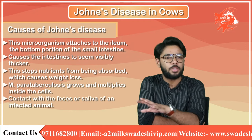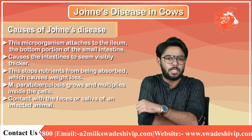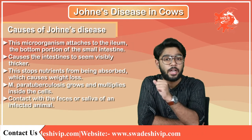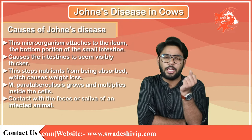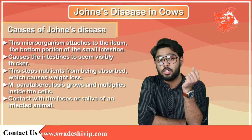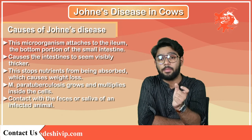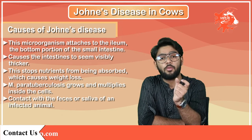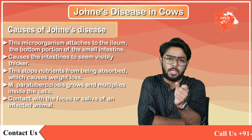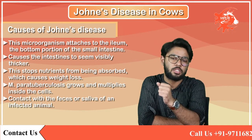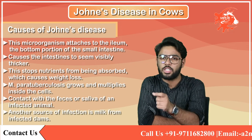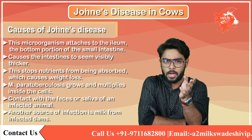The primary cause of the spread of Johne's disease is contact with the feces or saliva of an infected animal. Prenatal exposure may also be a source of infection — calves becoming infected before birth is possible if the mother is in the late stages of Johne's disease. Another source of infection is milk from infected dams.